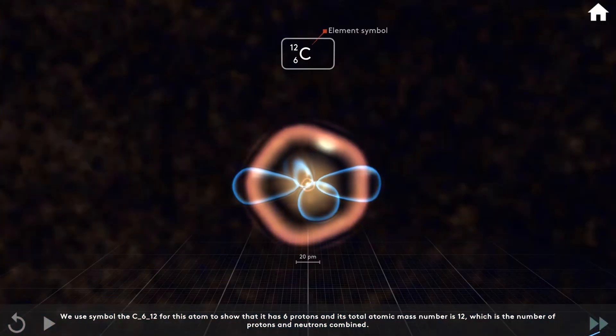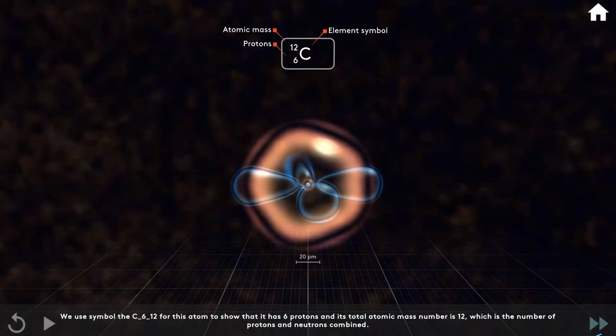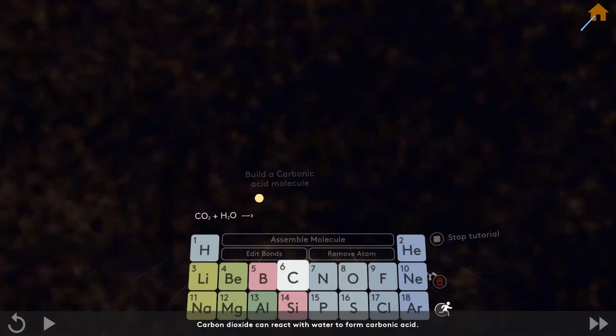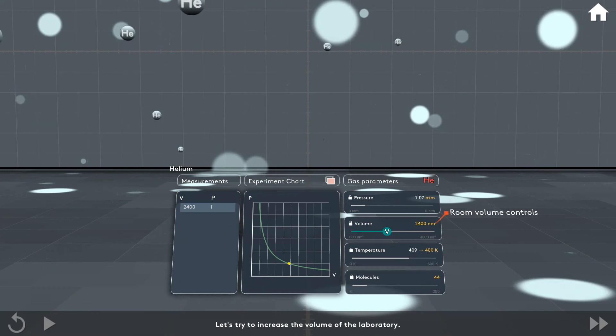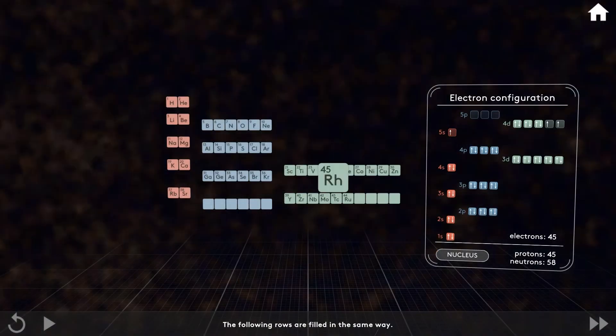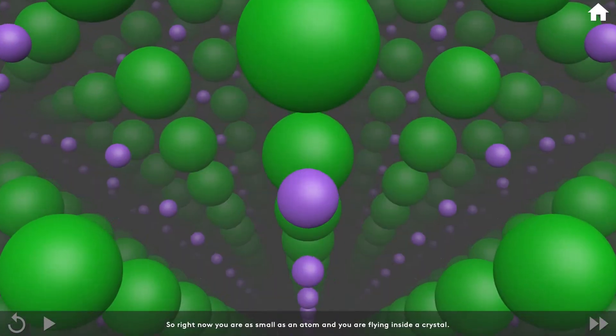MEL Chemistry has lessons and labs on atoms including isotopes and ions, molecules including molecular structure and isomerism, gas laws, and the periodic table, with more content to come.